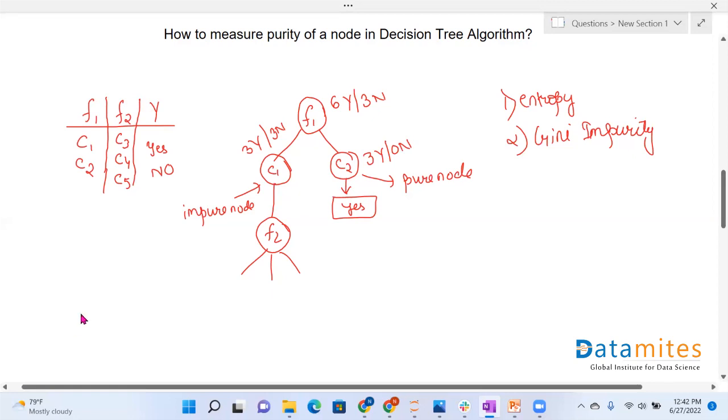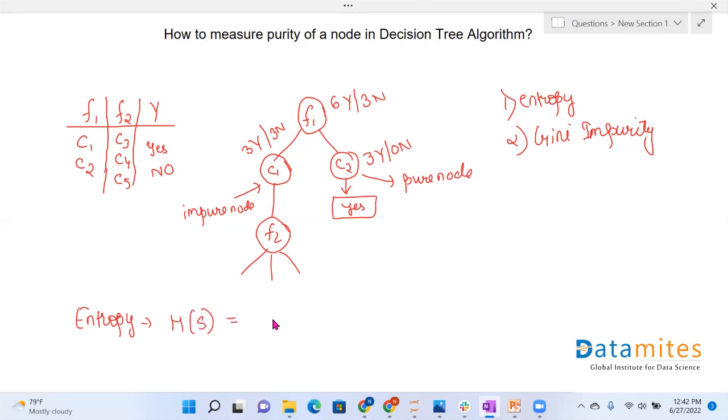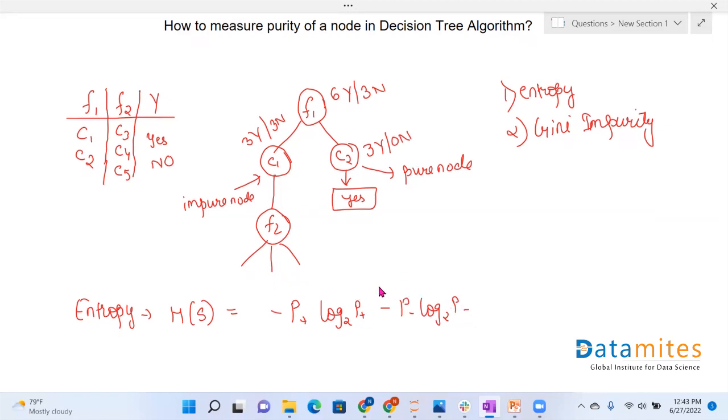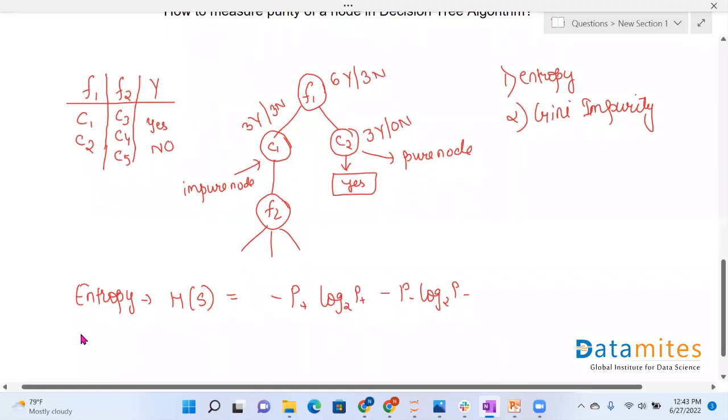Entropy is given by the formula. Entropy is represented by H of S which is given by minus P plus log base 2 P plus minus P minus log base 2 P minus, where P plus is the probability of yes in our case and P minus is the probability of no.